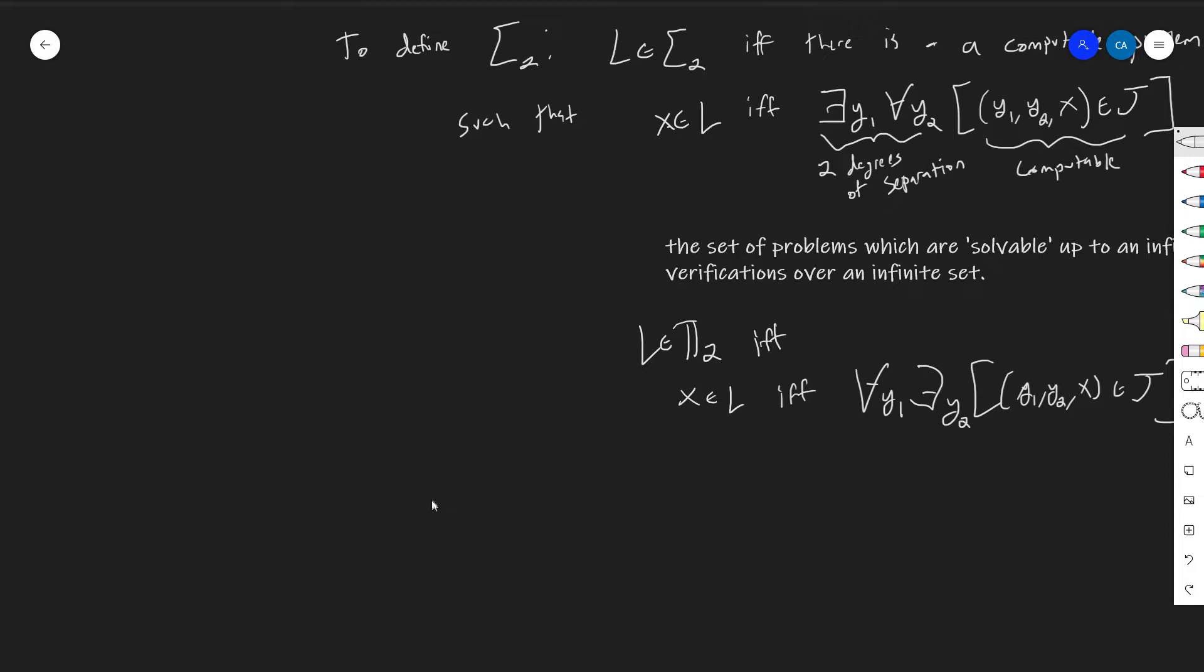I can say, you know, pi 3, if and only if, L is in pi 3, if and only if, x is in L, if and only if, for all y1, there exists a y2, such that, for all y3, you know, blah, blah, blah, something computable.